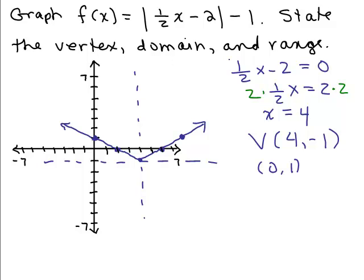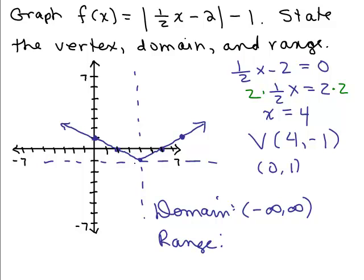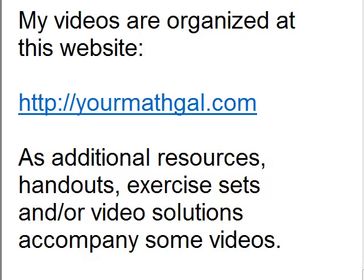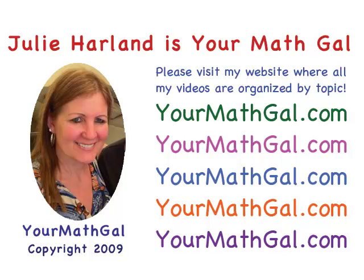The last thing we need is the domain and range. The domain is always the same — x can be anything, so it's from negative infinity to positive infinity. The range: there's a bottom number, the lowest y-value is negative 1, the y-coordinate of the vertex. So the range is from negative 1 to infinity. This will be true for any absolute value function that opens upward. Please visit my website at yourmathgal.com where you can view all my videos organized by topic.